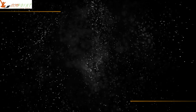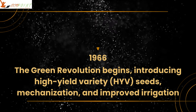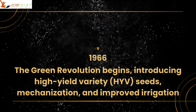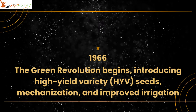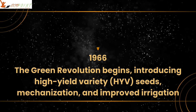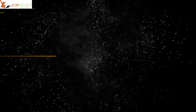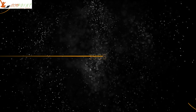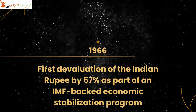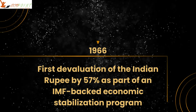It was based on the Mahalanobis model. In 1966, the Green Revolution began, introducing high-yielding varieties of seeds. Also in 1966, the first devaluation of the Indian rupee happened, following two wars.